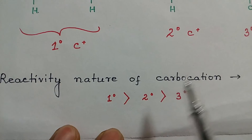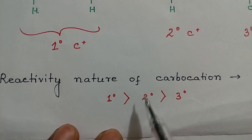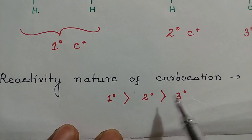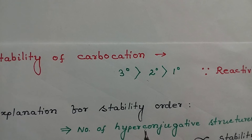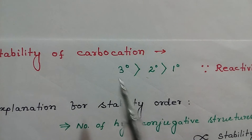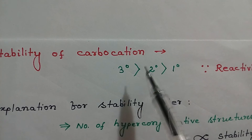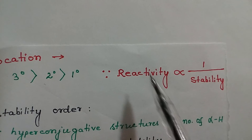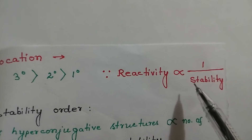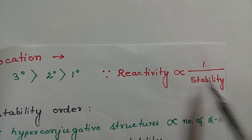Reactivity of carbocations: primary carbocation is more reactive than secondary carbocation, which in turn is more reactive than tertiary carbocation. Stability of carbocations: tertiary carbocation is more stable than secondary carbocation, which in turn is more stable than primary carbocation. Reactivity is inversely proportional to stability — if the stability of a carbocation is more, it is less reactive, and vice versa.